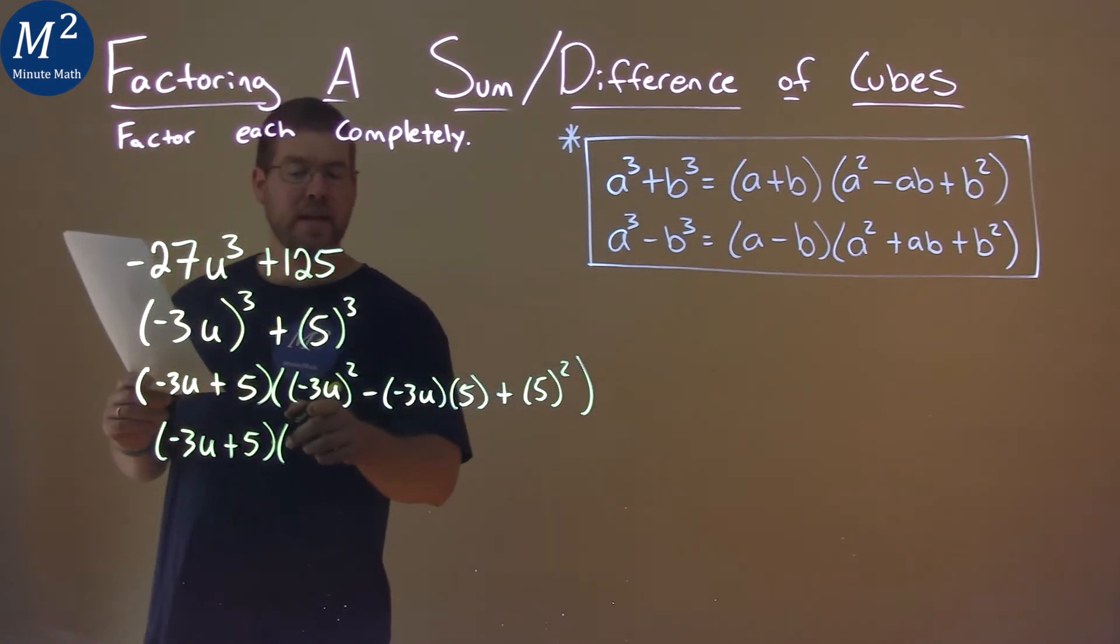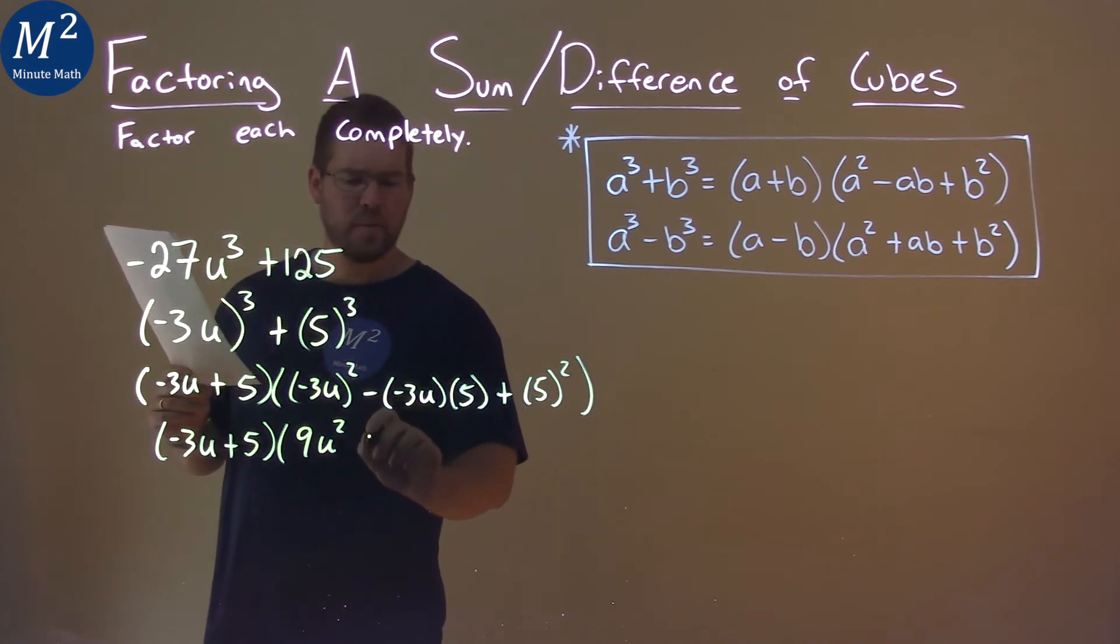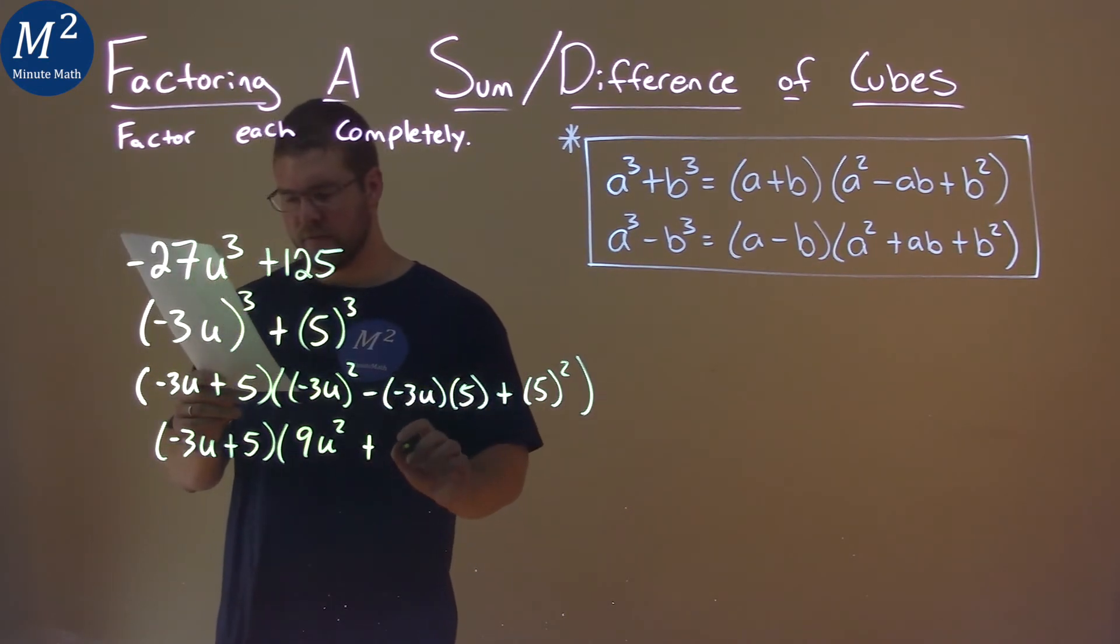Negative 3u all squared, well negative 3 squared is positive 9, and then u squared is u squared. Negative and a negative become a positive, and 3 times 5 is 15, and we have the u still.